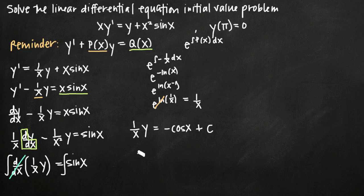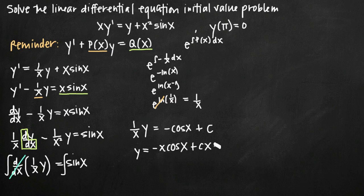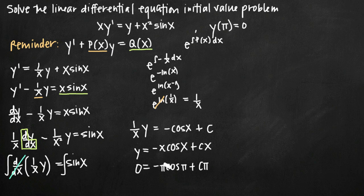Now we want to solve for y before plugging in the initial condition. Multiplying both sides by x, we get y equals negative x cosine of x plus Cx. From here we plug in the initial condition: x equals pi and y equals zero. We get 0 equals negative pi cosine of pi plus c times pi. Evaluating cosine of pi gives negative 1, so negative pi times negative 1 is positive pi.